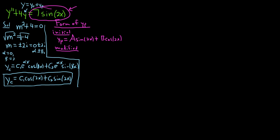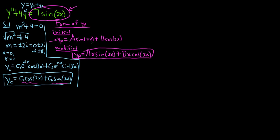Now we have to look and see if there is repetition between our initial guess and the terms of Y_C. There is — we have a sine 2X and a cosine 2X. So what we do is multiply by X to eliminate the repetition. Our modified guess becomes AX sine 2X plus BX cosine 2X. We had to multiply by X because sine 2X repeats with Y_C and cosine 2X repeats with Y_C as well.